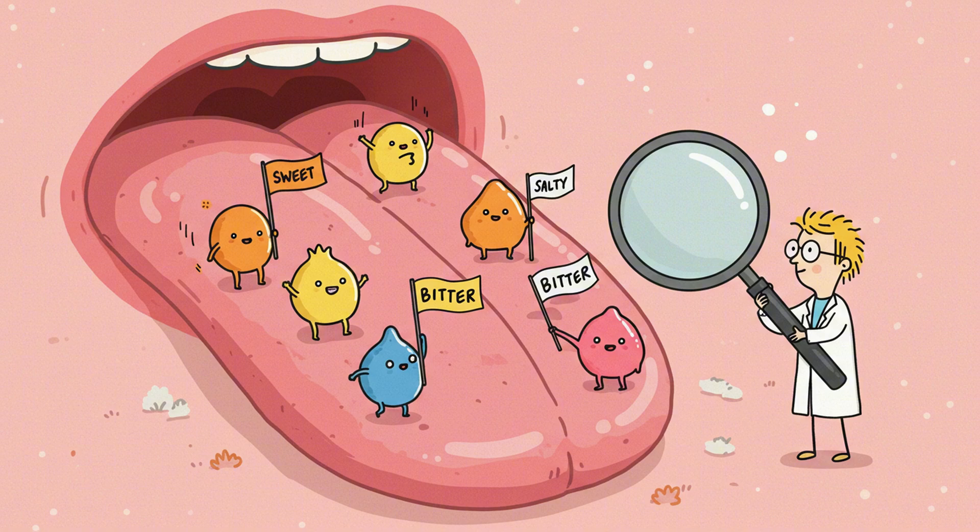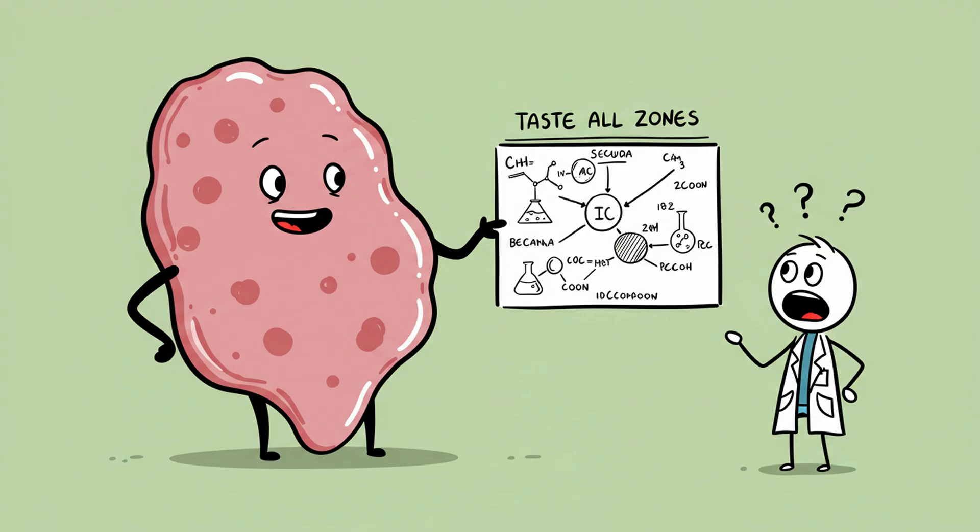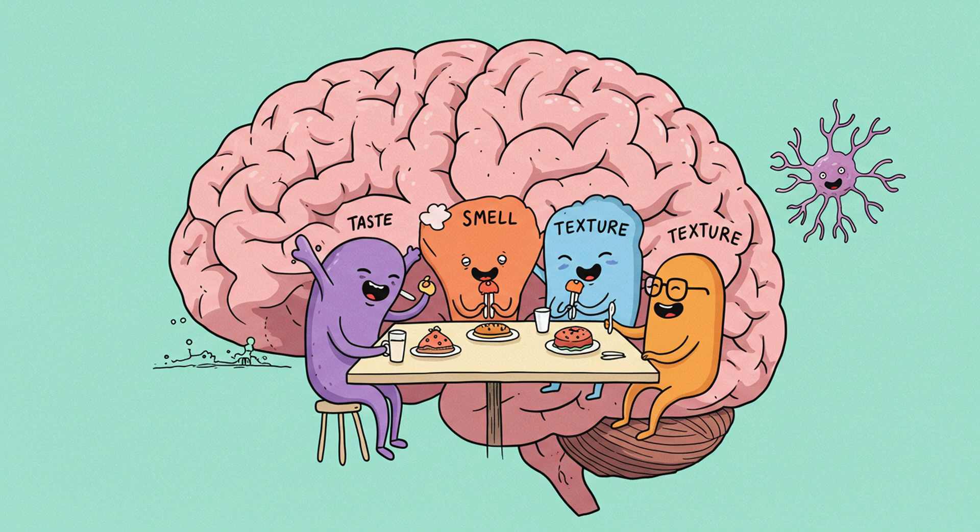Every part of your tongue has receptors for all five major tastes. Sweet, sour, salty, bitter, and umami. Your taste buds, thousands of them, are tiny chemical detectors. They sit inside small papillae all across the tongue, each connected to cranial nerves that send electrical signals to your brain's gustatory cortex.